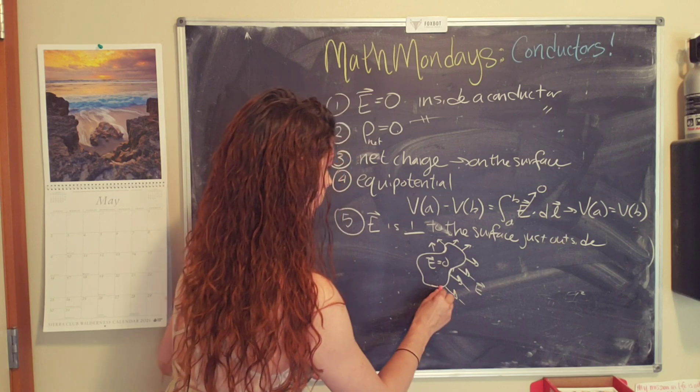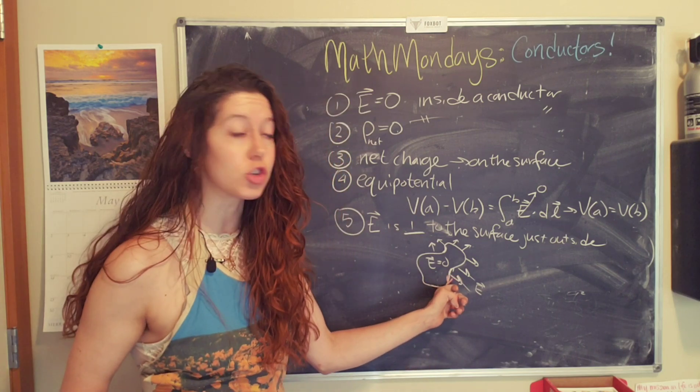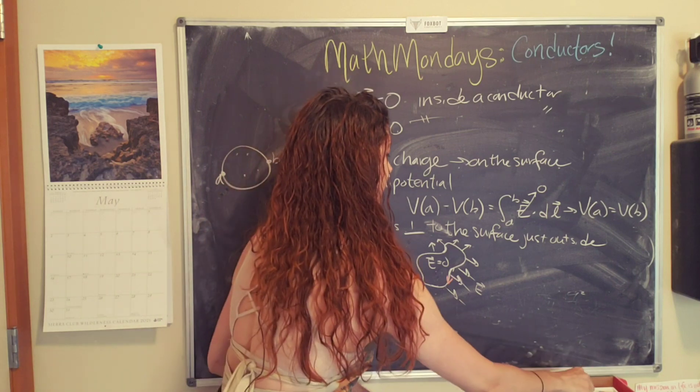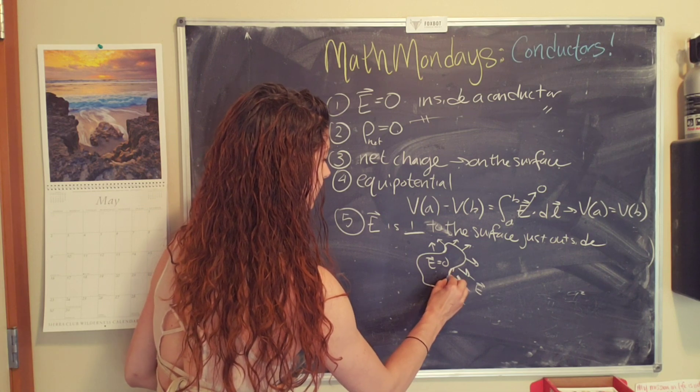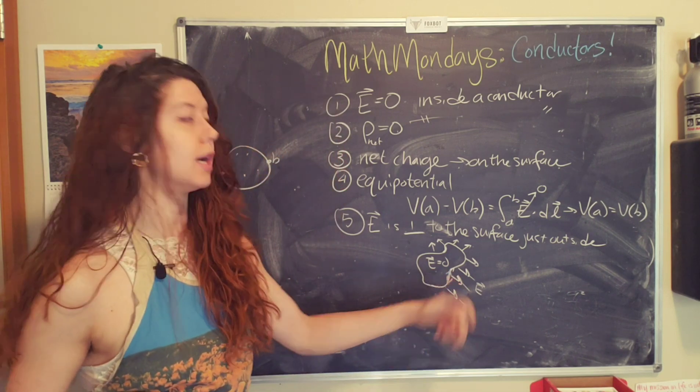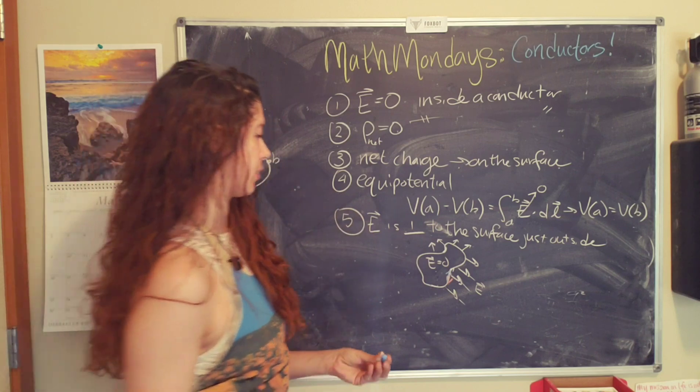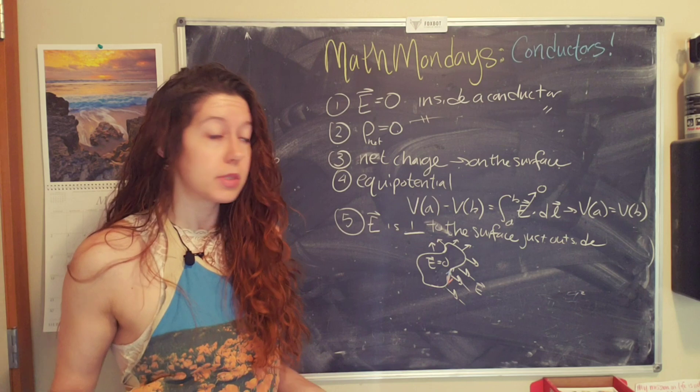Let's say that my electric field had a component in this direction, but the free charges are like, excuse me, no, I'm going to float along here and cancel you out. And so you end up with an equal and opposite electric field line.